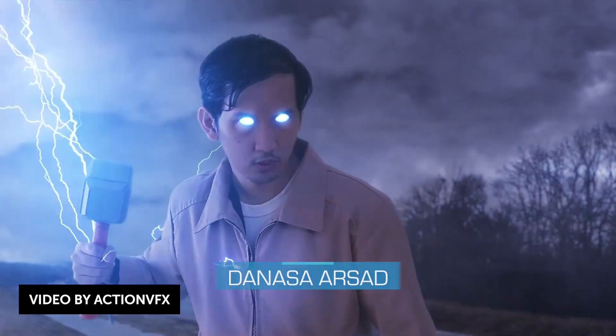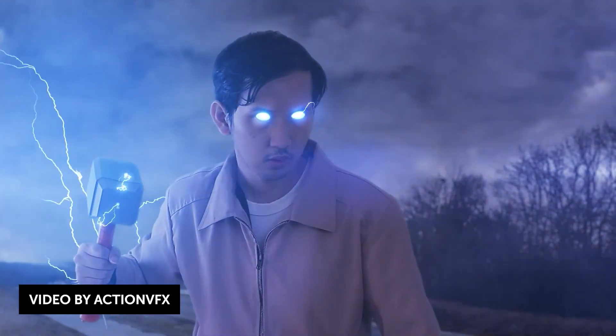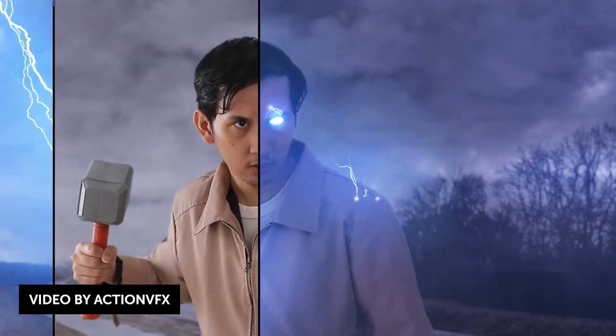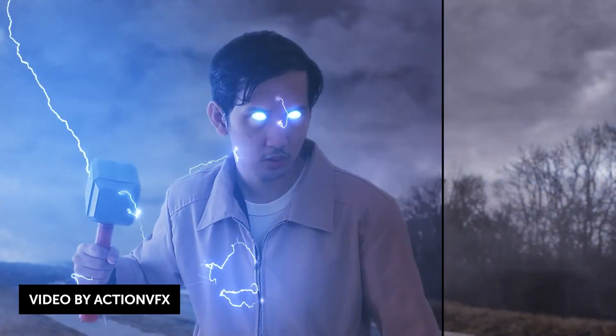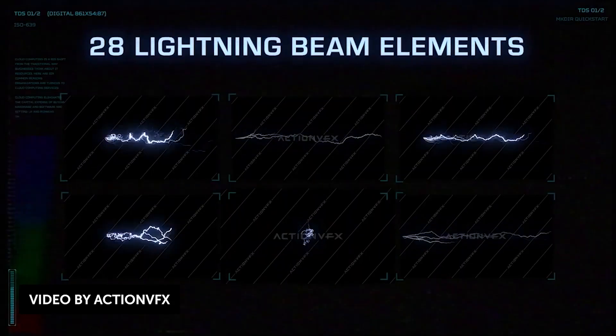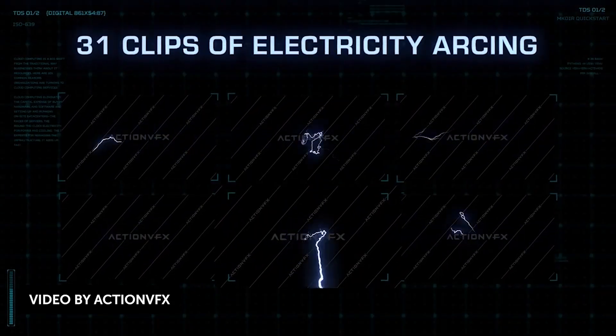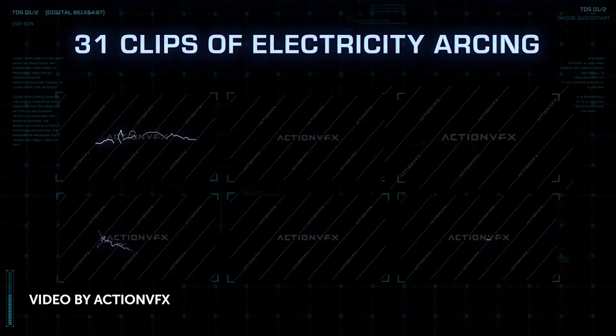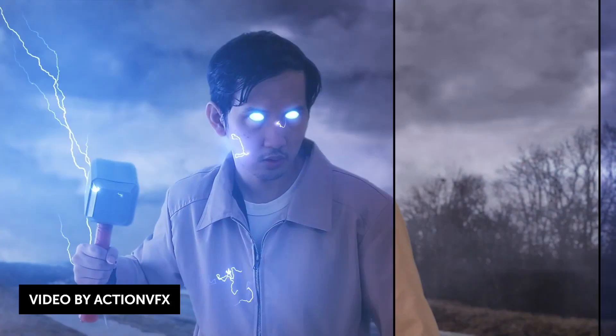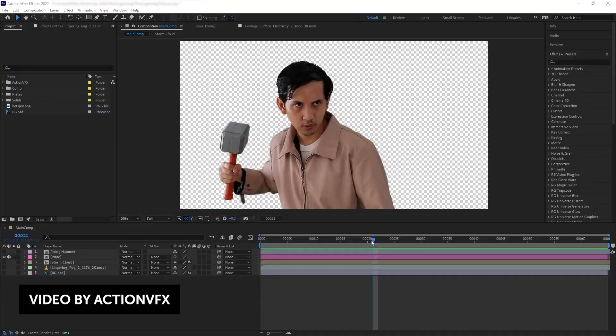Your friends over at Ashton VFX released three new tutorials. The first one is how to create VFX lightning from Thor: Love and Thunder. The tutorial uses their free lightning pack, and you'll learn how to create intense glows, how to use electric arcs and beams, and how to composite it all together.